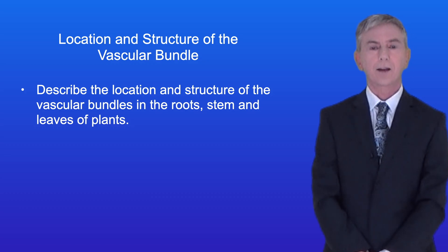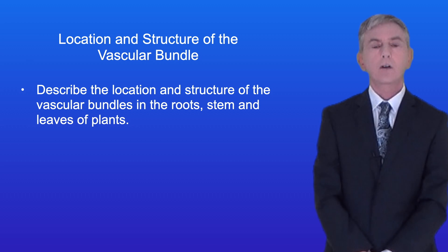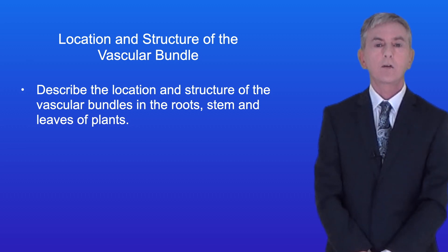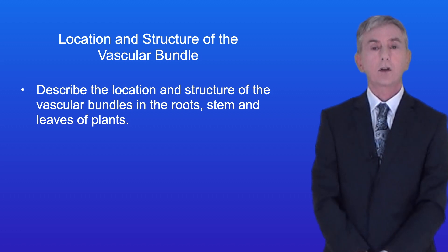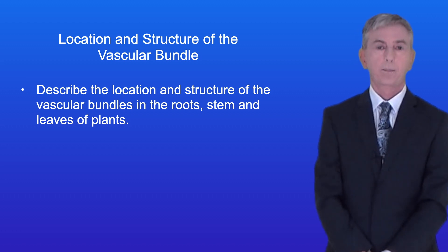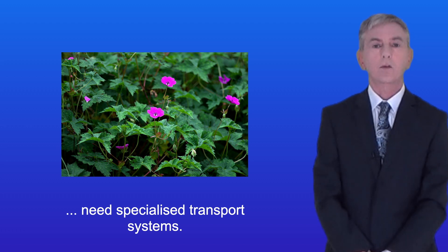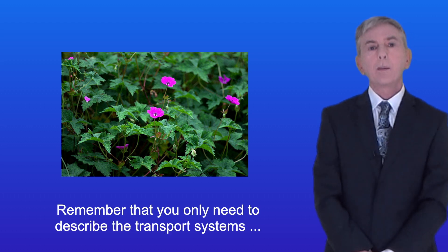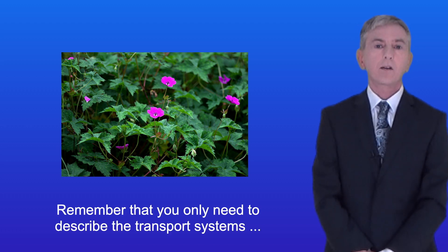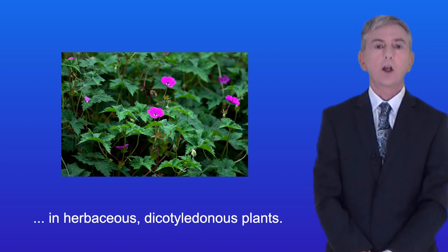Hi, welcome back to Free Science Lessons. By the end of this video you should be able to describe the location and structure of the vascular bundles in the roots, the stem and the leaves of plants. In the last video we looked at why plants need specialised transport systems. Remember that you only need to describe the transport systems in herbaceous dicotyledonous plants.